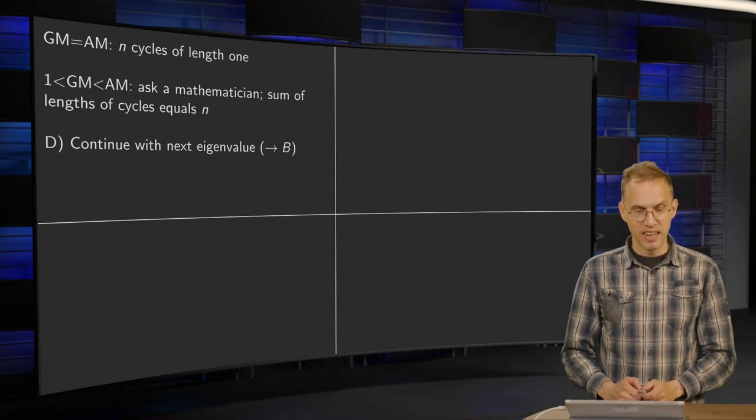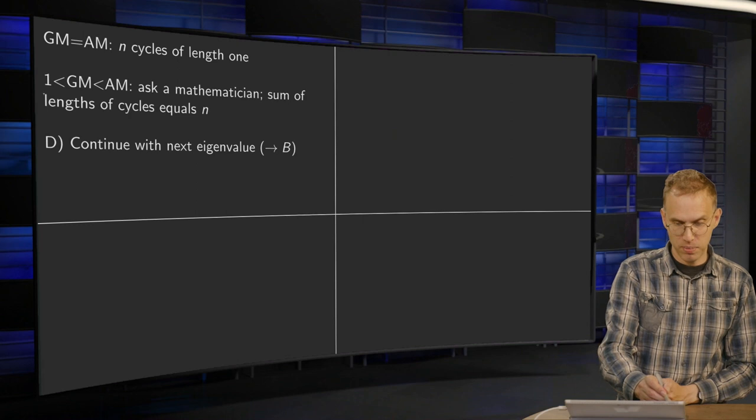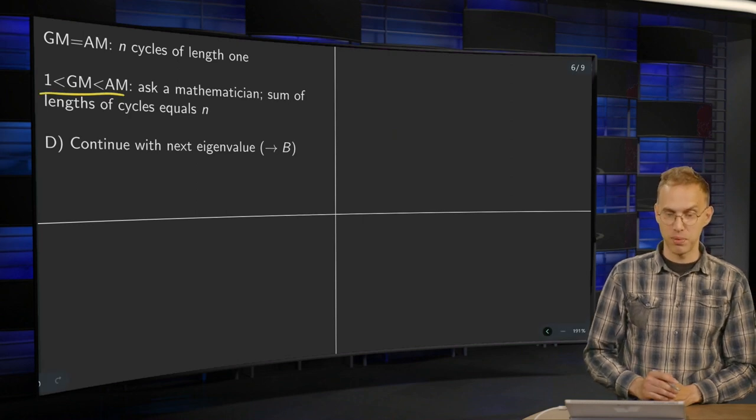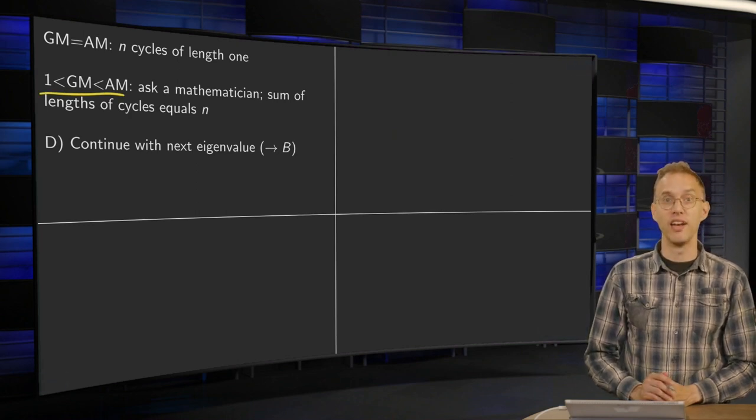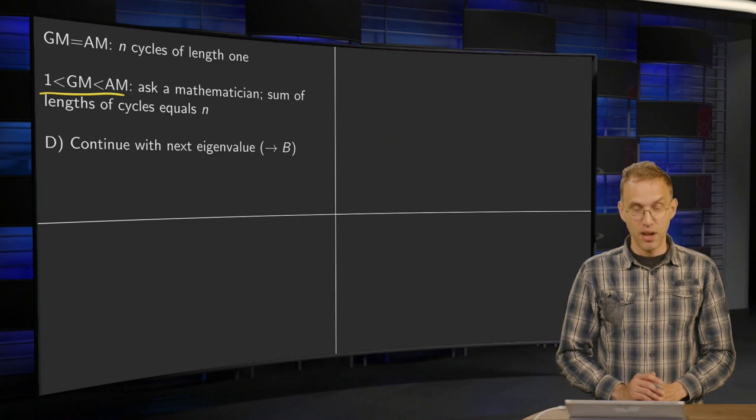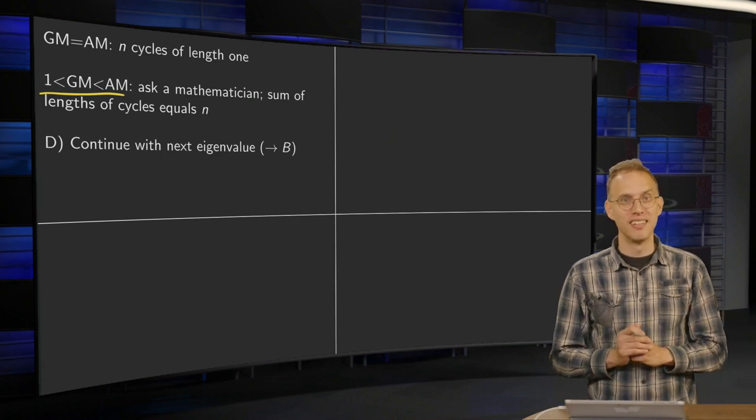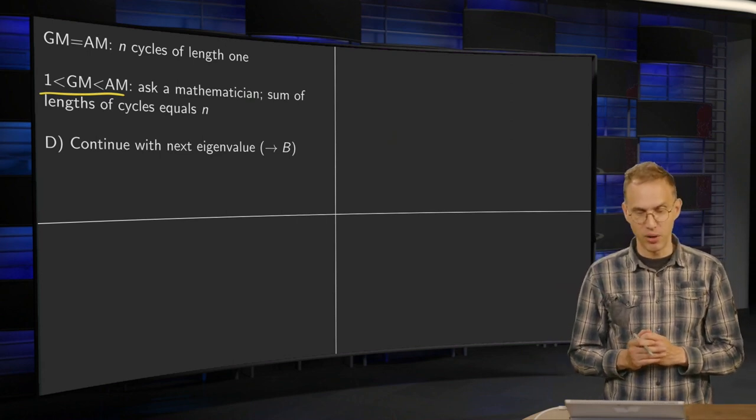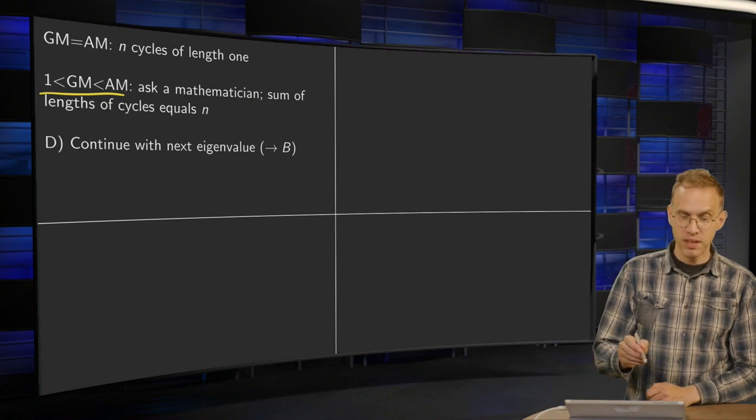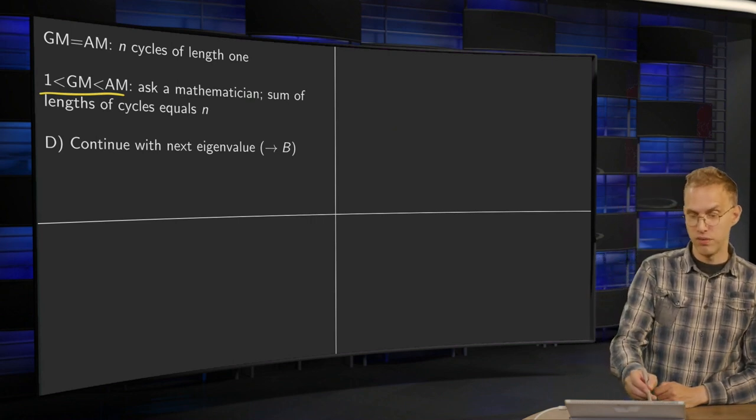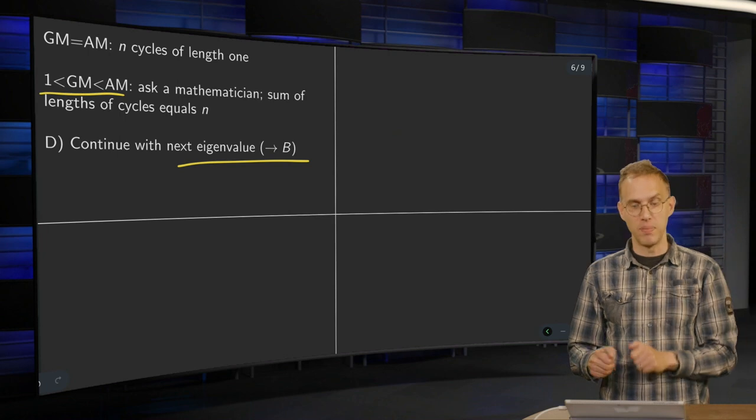And this in-between case, geometric multiplicity between one and algebraic multiplicity, that's very annoying. Ask a mathematician, I put there. That's in general a very annoying case. And then step D, I continue with the next eigenvalue. So go to step B.